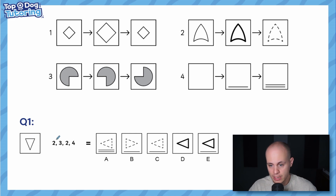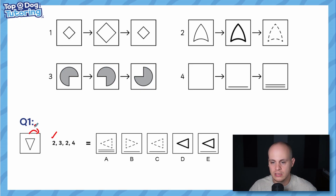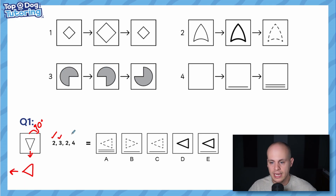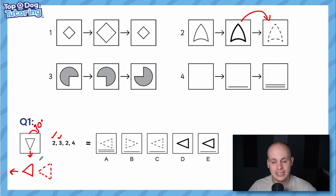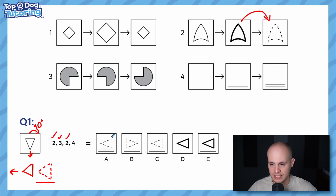Operation two makes the triangle bold. Operation three rotates it 90 degrees clockwise — now it's facing left, still bold. Start jotting this down. Applying two again moves to the next step: bold becomes dashed, so now I have a dashed triangle facing left. Finally, operation four adds a straight line to the bottom. Looking at the answers: A has two lines, B faces the wrong way, D and E are bold — so the answer is C.